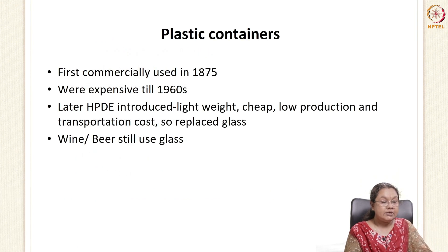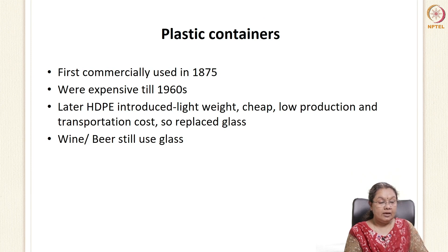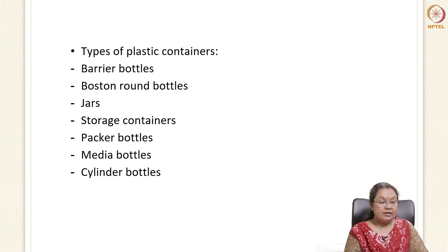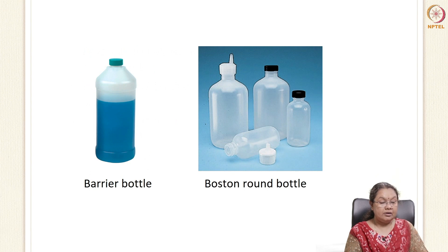Basically glass, plastic, and metal containers are used. Plastic containers were commercially used since 1875 and were very expensive until the 1960s. After 1960, HDPE was developed and introduced into the market. It became very popular because of its lightweight, cost-effectiveness, low production and transportation charges, and its ease of replacing glass. HDPE has become very popular and replaced almost all other plastics. Plastic containers are available in different forms: barrier bottles, Boston round bottles, jars, storage containers, packer bottles, media bottles, and cylinder bottles.